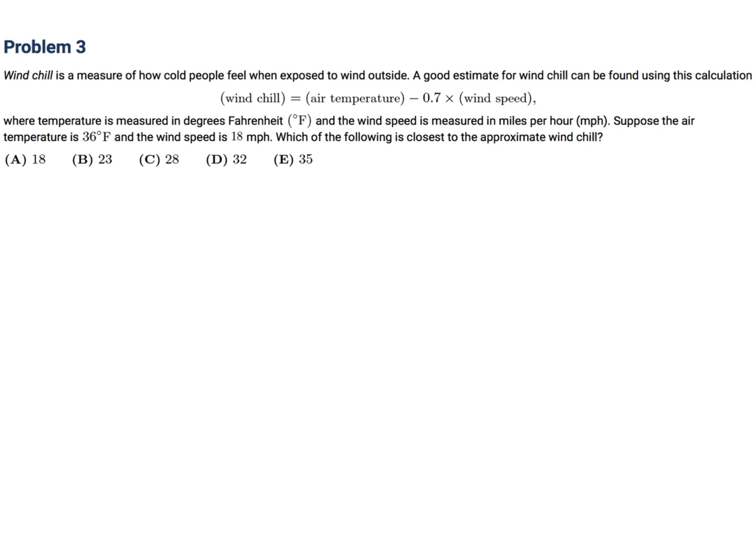Problem number 3. Windchill is a measure of how cold people feel when exposed to wind outside. A good estimate for windchill can be found using the calculation windchill equals air temperature minus 0.7 times wind speed. Where temperature is measured in Fahrenheit, wind speed in miles per hour. Suppose that the temperature is 36, wind speed is 18, which of the following is closest to the windchill.